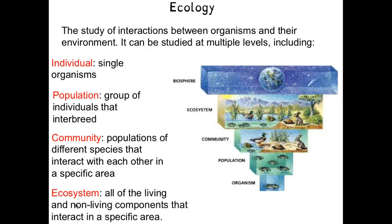An individual or organism is a single individual — whether it's an animal, a plant, a bacterium, it doesn't matter. Larger than that is a population, which is a group of those individuals that interbreed. So all the fish, all the sparrows, or all the wildcats in one area constitute a population.